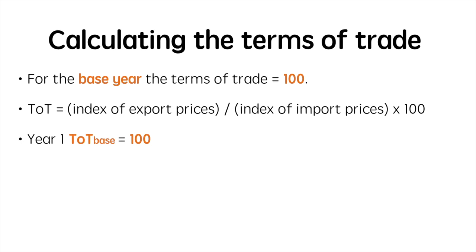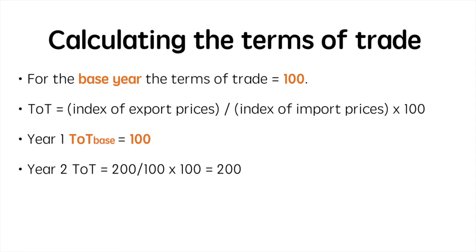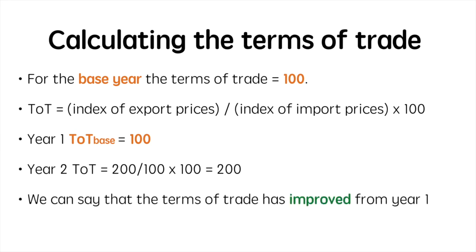The base year terms of trade is always 100. Assume now that in year 2 that same export basket sells for twice as much in the global market. If we are still able to buy the same goods in that import basket for the same prices as last year, we have an improvement in our terms of trade from 100 to 200. We can now buy twice as much as we did before given the increase in the amount we can earn for the basket of exports used in the base year.